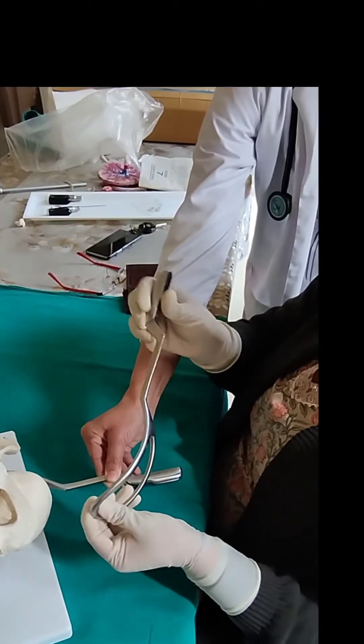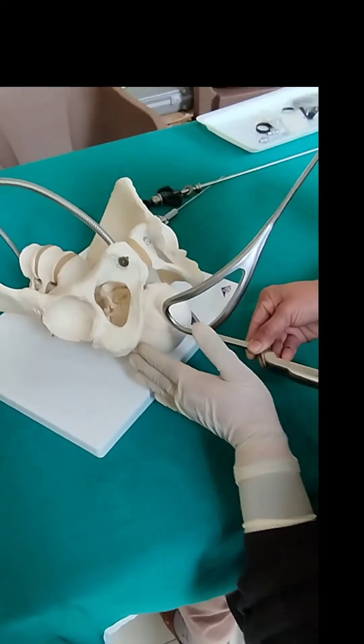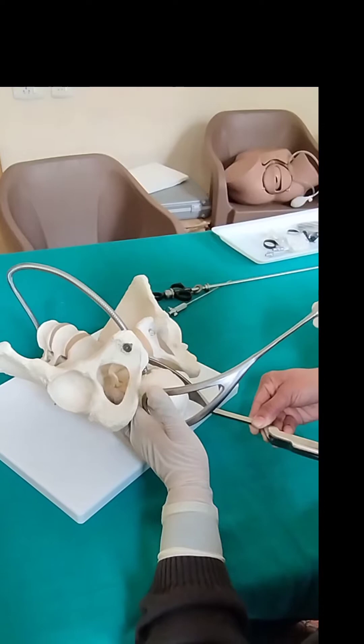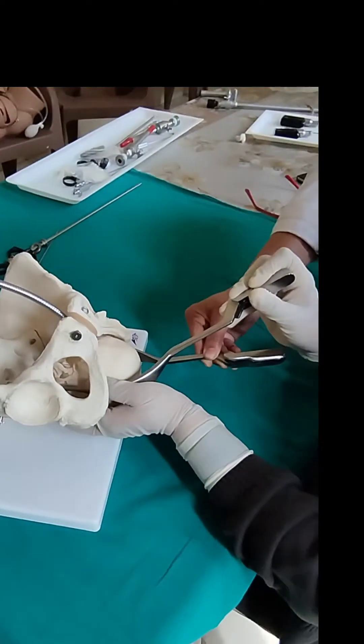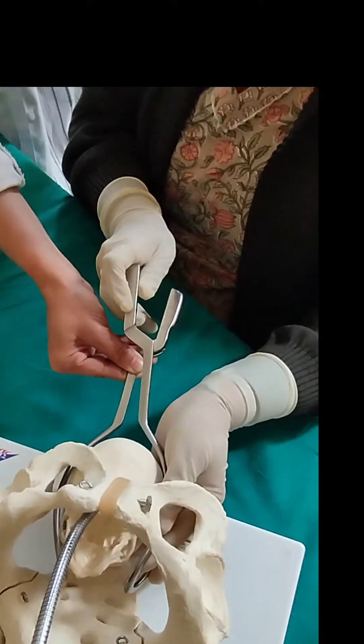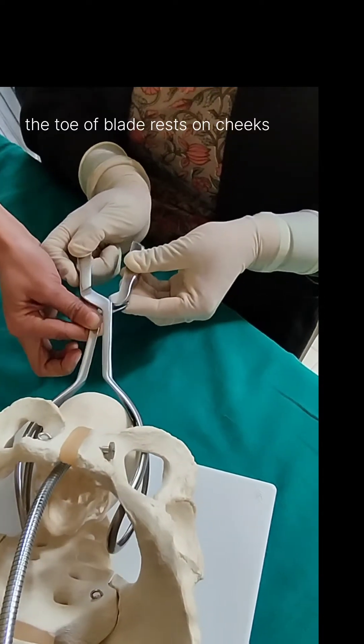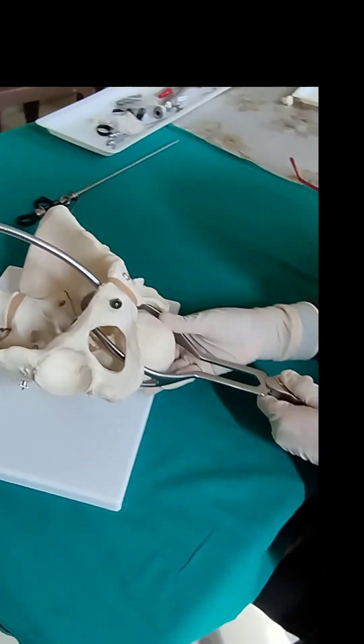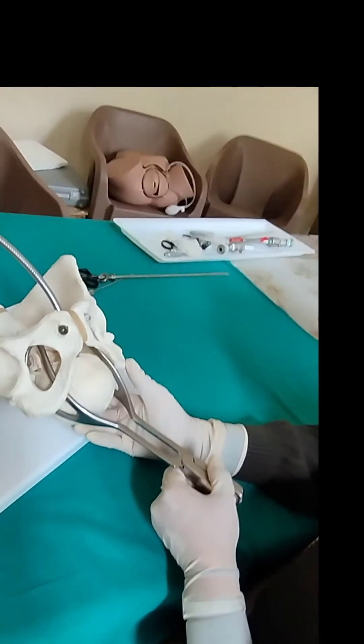Then take the right blade, make it to 45 degrees. Again insert your left hand to act as a guard. Under guidance of your hand, you will insert this blade also. Once it reaches its proper position, you will lower it down and you will try to lock both the blades. This is the way you apply the forceps.